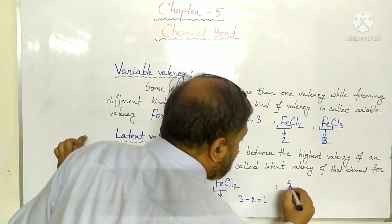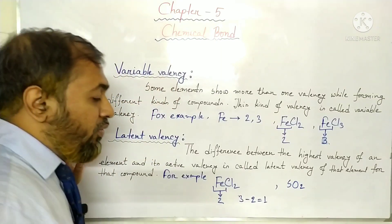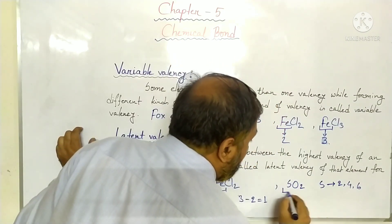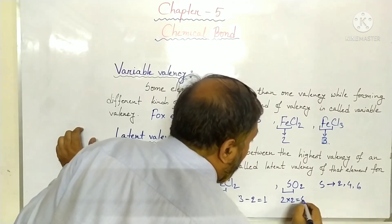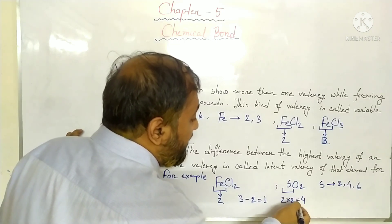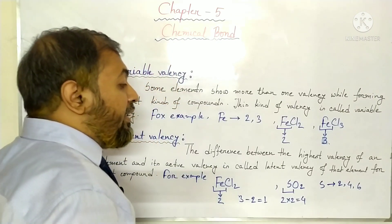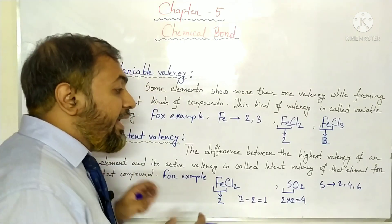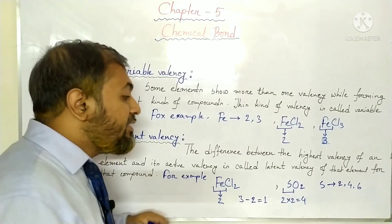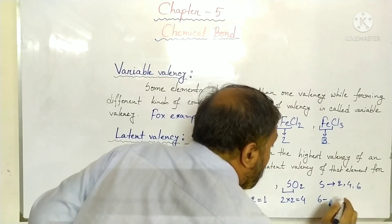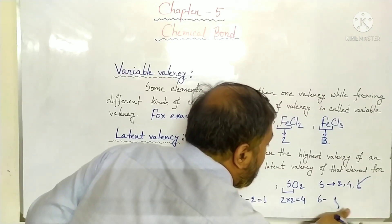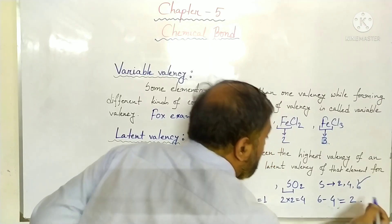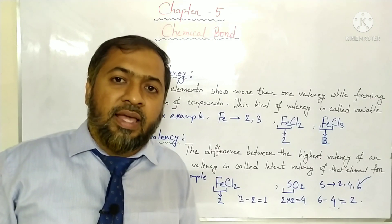Similarly, here is sulphur dioxide. We know that sulphur shows 3 valences: 2, 4, and 6. In sulphur dioxide, the valence of sulphur is 2 × 2 = 4, since the valence of oxygen is 2 and there are 2 oxygen atoms. But sulphur does not use its full capacity, so something remains hidden inside this compound — that is the latent valence of sulphur. The latent valence of sulphur here is 6 − 4 = 2, where 6 is the highest valence of sulphur. So this is all about variable valence and latent valence.